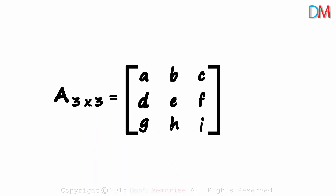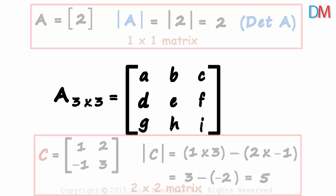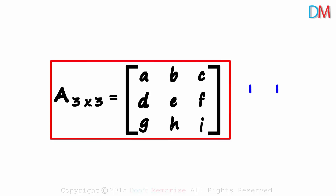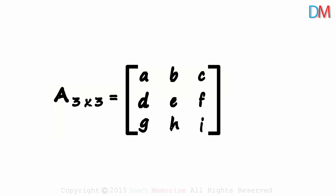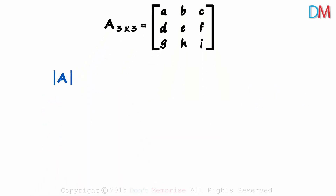How do we find the determinant of a 3 by 3 matrix? We have seen how determinants of 1 by 1 or 2 by 2 matrices are calculated. If we have a 3 by 3 matrix like this, how do we find its determinant? I will be showing you one of the ways to solve for the determinant, and we will look at the other ways in another video.